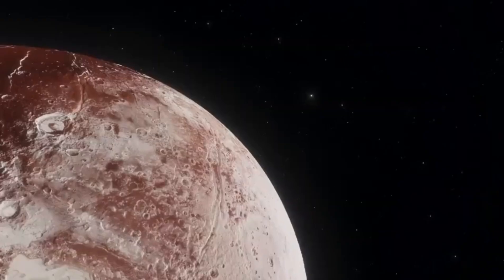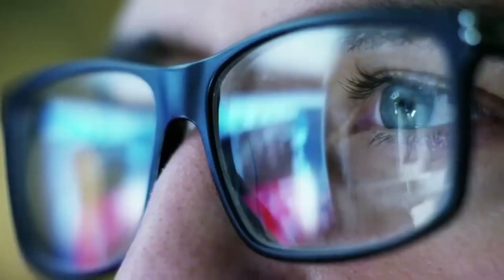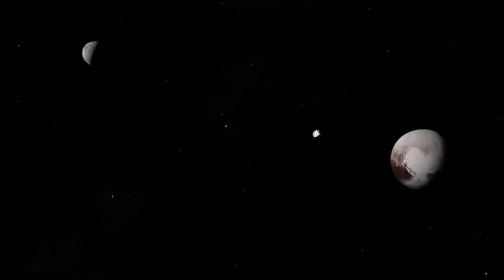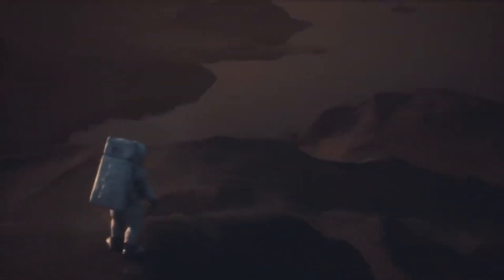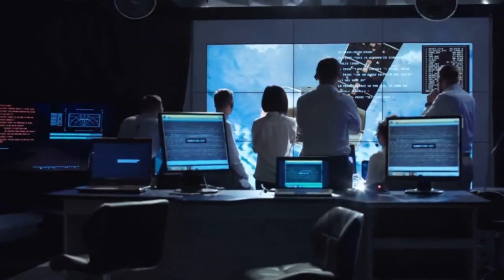To date, 82 moons have been discovered in the orbit of the gas giant. No other planet in our solar system has more satellites than Saturn. The largest and also best-known moon is Titan, with a diameter of about 5,150 kilometers.